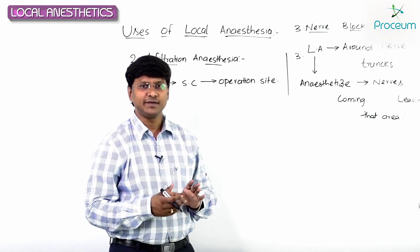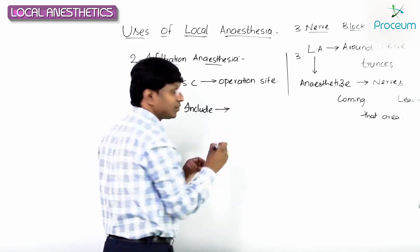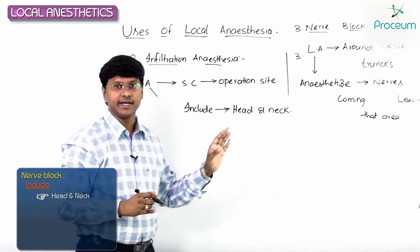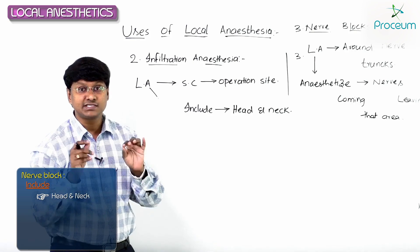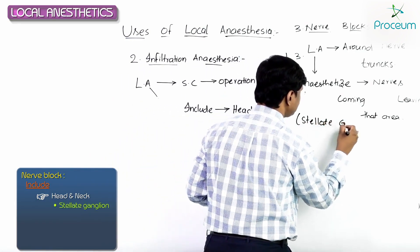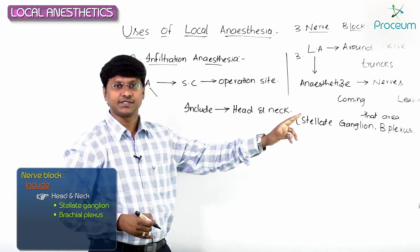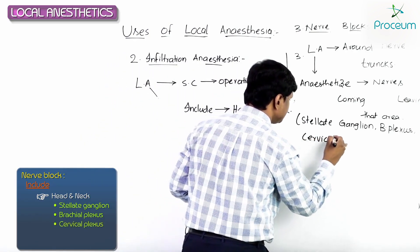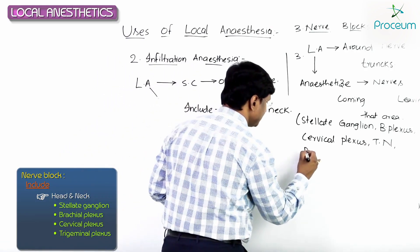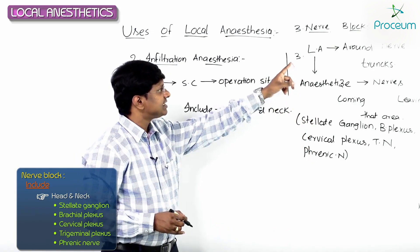The various nerve blocks include blocks around the head and neck. The nerves that can be blocked around the head and neck are: number one, the stellate ganglion; the brachial plexus; the cervical plexus; the trigeminal nerve; and also the phrenic nerve.